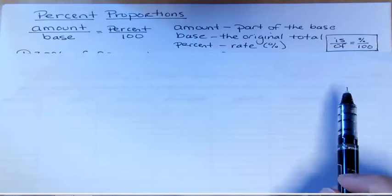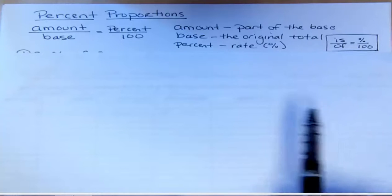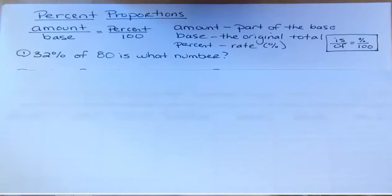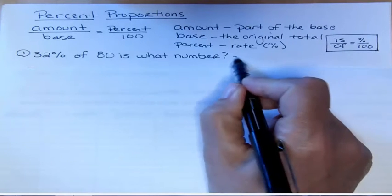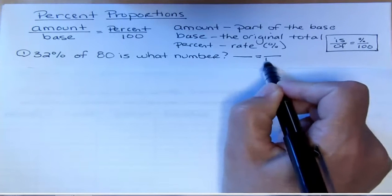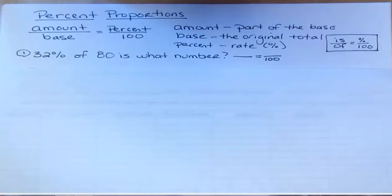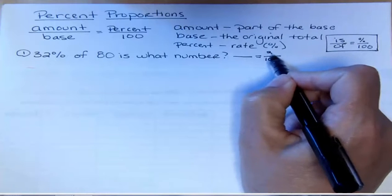Let's take a look at one type of problem. This first one says 32 percent of 80 is what number. We always have three things and we're always looking for the fourth thing in these problems. I know that I have 100 because I always have that—that's never unknown, that's a given. Then I look for the number that has the percent symbol on it. That's 32, so that goes up here. I don't change it into a decimal because putting 32 over 100 already makes it a percent.